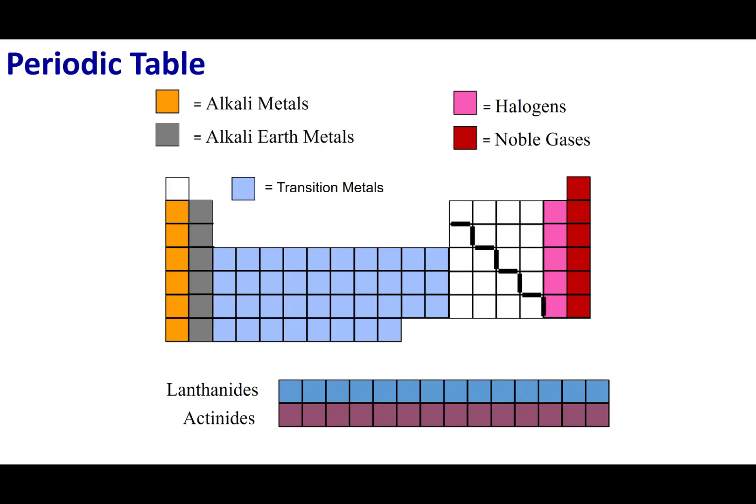We can further classify the periodic table by going down a column or family in the periodic table. Sometimes they refer to these as groups. The first column are called the alkali metals. The second column the alkali earth metals. The block after these two columns is called the transition metals. The very last row are the noble gases and the one next to the noble gases are the halogens. The lanthanides and the actinides are offset from the periodic table. You should memorize these groups and know their general location.